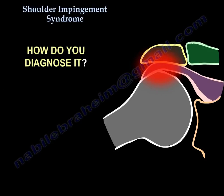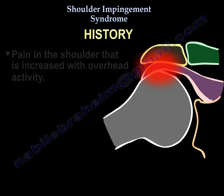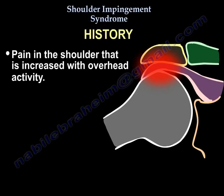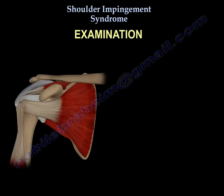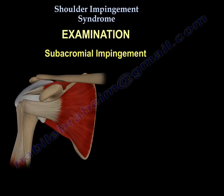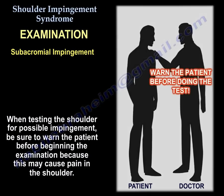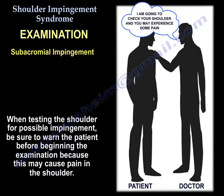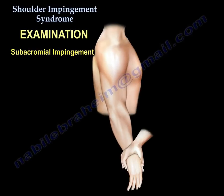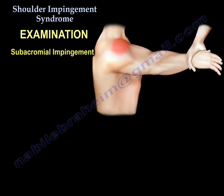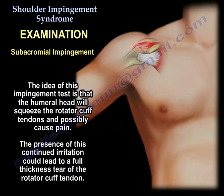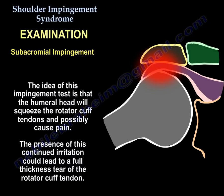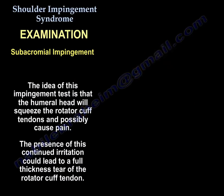How do you diagnose it? We start with the history — pain in the shoulder that is increased by overhead activity. If the patient has night pain, non-operative treatment would probably not work; it's likely a cuff tear. We then examine the patient and move the arm, warning them because they may experience pain. These are called impingement tests. The idea is that the head of the humerus will rise up and squeeze the tendons, causing pain and stopping the patient from lifting the arm. Keep in mind these tendons can progress to a full-thickness cuff tear with continued irritation.